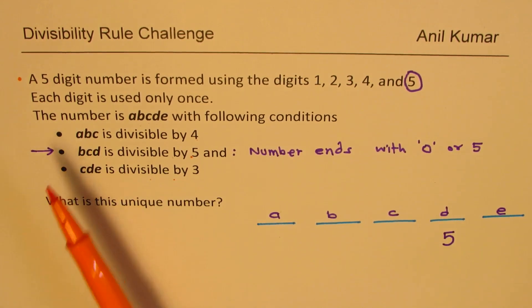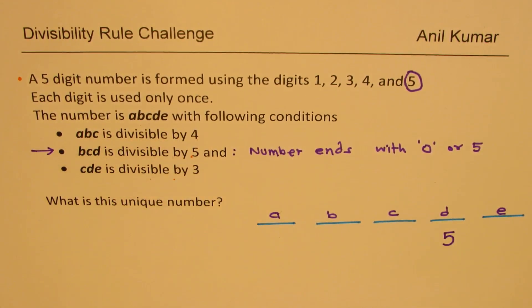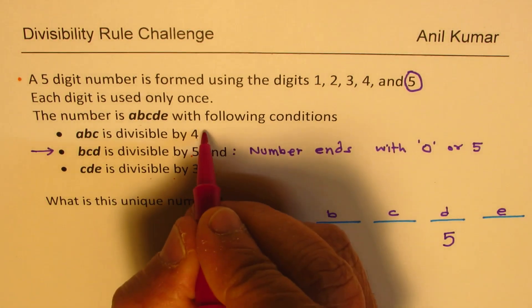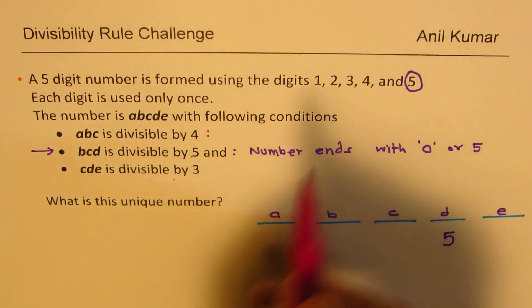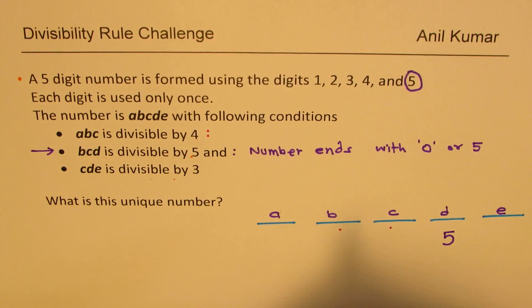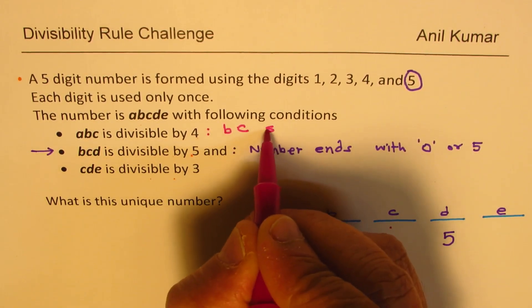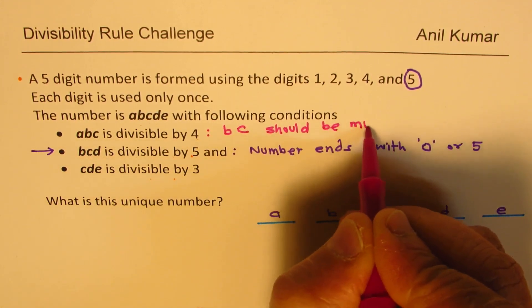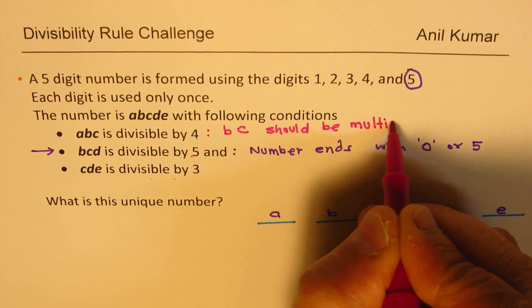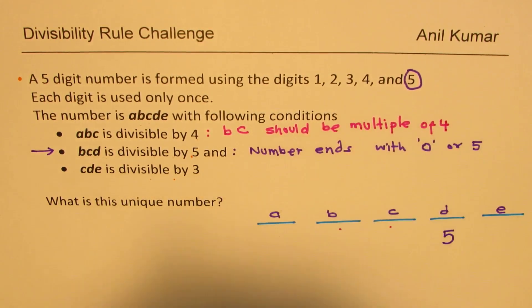Now, let's look into the first statement which says ABC is divisible by 4. What is the rule for 4? Well, it should be an even number for sure. Second, the last 2 numbers, that means BC, should be multiple of 4.